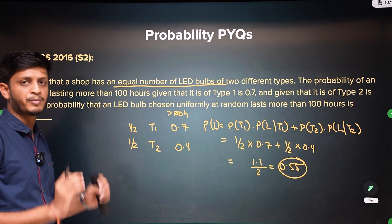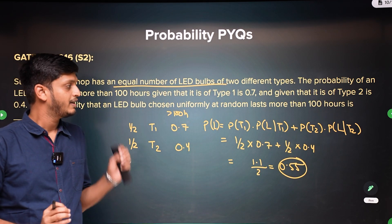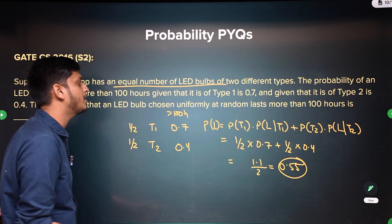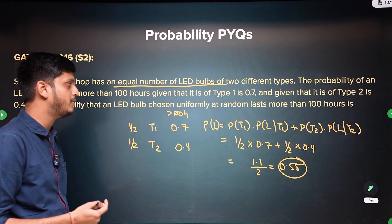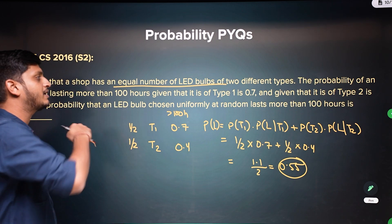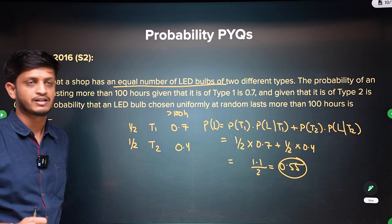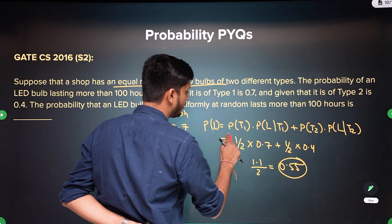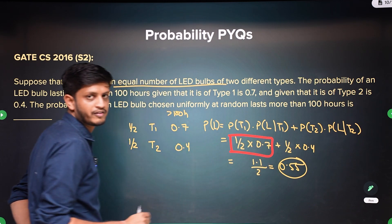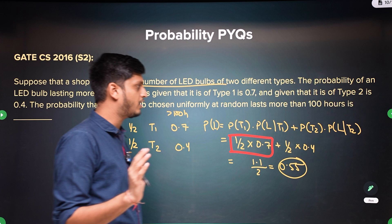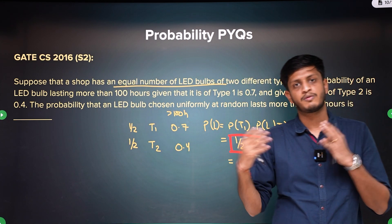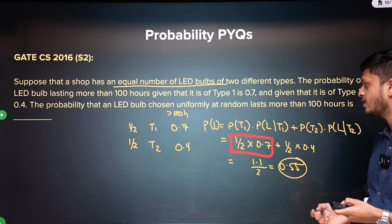This is a total probability question only. Had the question been: given that a randomly chosen LED bulb lasts more than 100 hours, what is the probability that it is of type T1? — then it would be the T1 contribution upon 0.55. So just read the question carefully to determine what it wants.